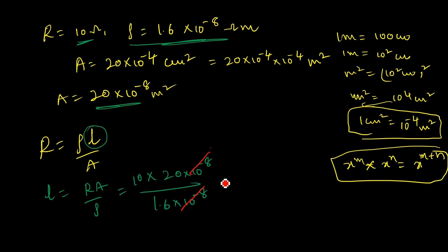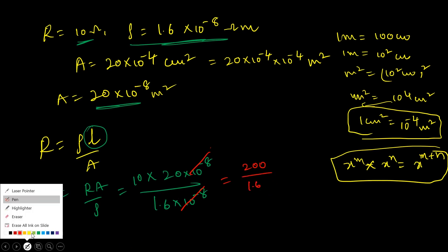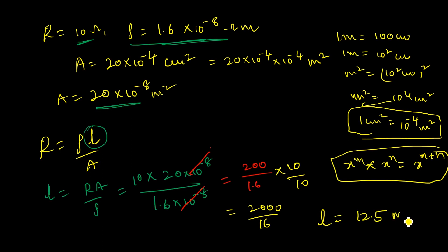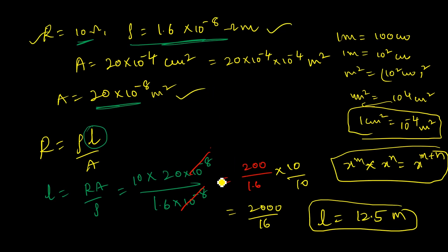After cancellation you get L equals 10 times 20 divided by 1.6, which is 200 divided by 1.6. Multiply and divide by 10 to get 2000 divided by 16, which gives the length L equal to 125 meters. Since we converted all units to meters, the final answer is in meters.